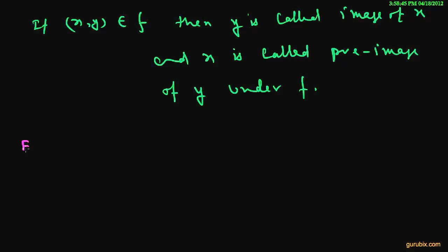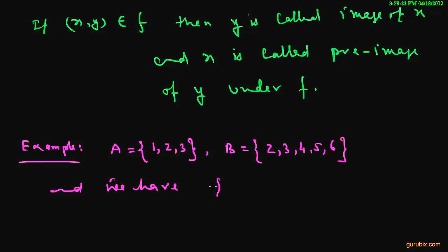Let me give you an example to make you understand properly. Suppose we have a set A in which there are three elements 1, 2 and 3. We have another set B in which there are elements 2, 3, 4, 5 and 6 and we have three subsets of A cross B as given below.